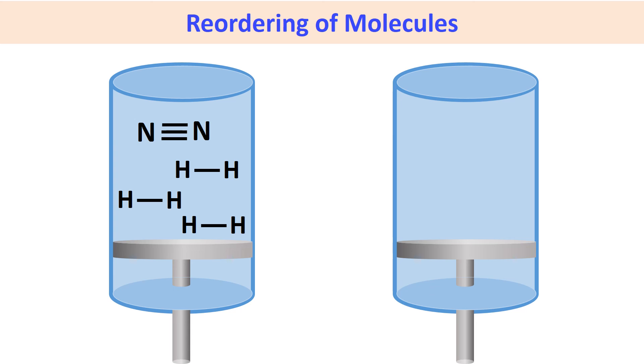Increase in pressure can raise the degree of molecular ordering. In this slide, we can see how nitrogen and hydrogen could be reordered to ammonia.